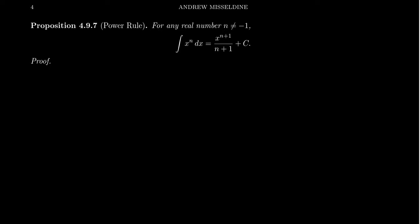Every derivative rule that we've learned in the past can actually be turned into an anti-derivative rule. To start off with, we'll use the power rule. With the power rule, if you take the derivative of a power function, you find its derivative by bringing down the exponent as a coefficient and lowering the exponent by one. So when we take d/dx of x to the n, you bring the exponent down and get n times x to the n minus one.